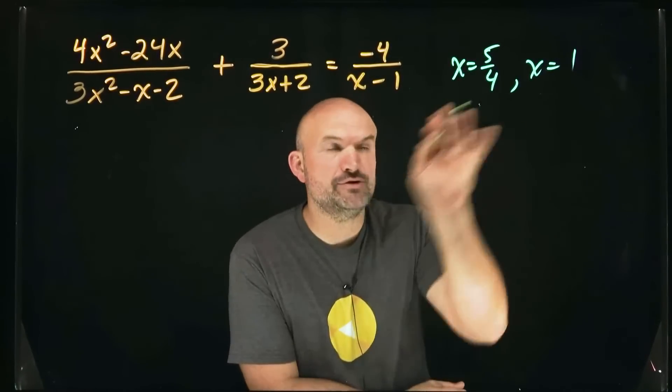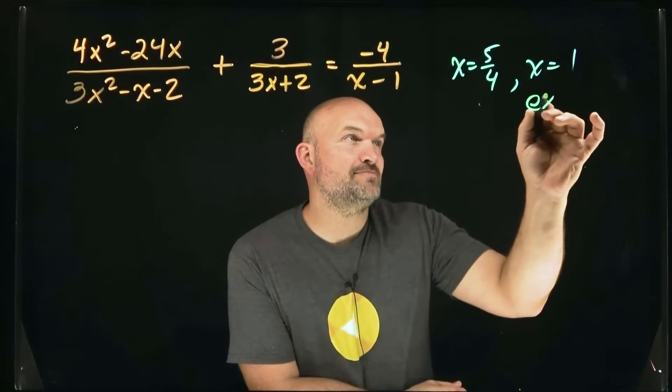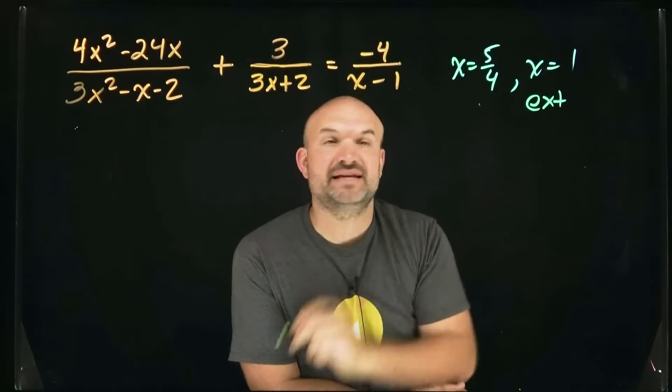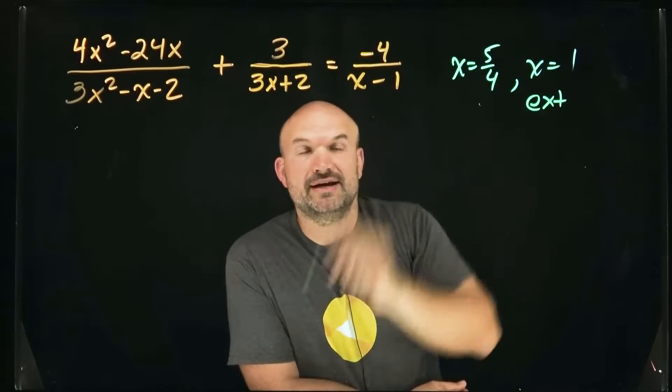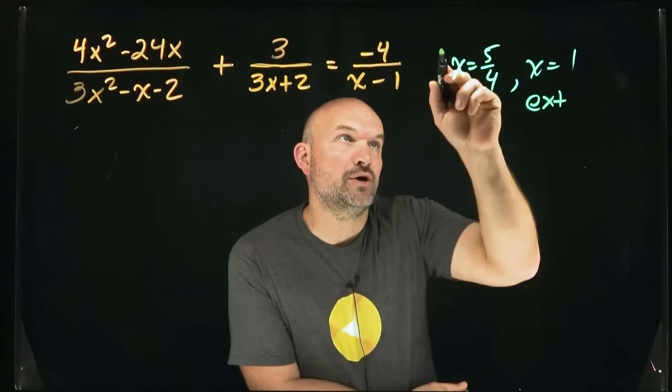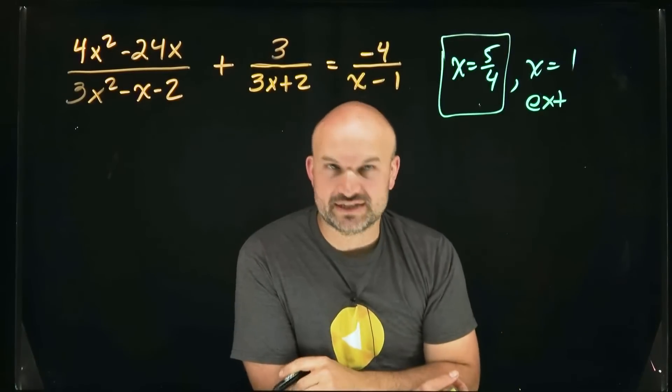I actually already solved this in another video and we got two solutions, but x equals one ended up being extraneous because when I plug one in there, we get a zero in the denominator. So therefore it's an extraneous solution. So x equals five-fourths is going to be our only solution.